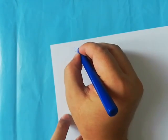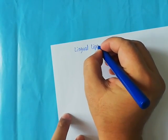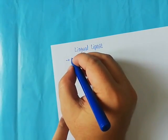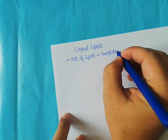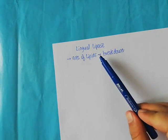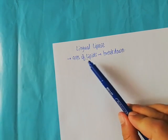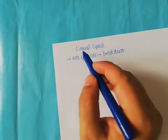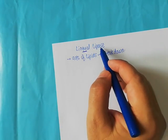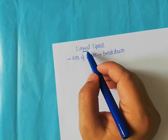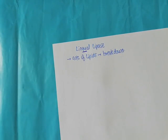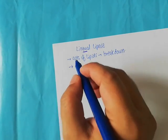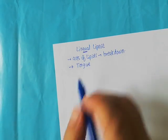Another important enzyme present in the saliva is known as lingual lipase. Lipases are enzymes that act on lipids, thereby causing their breakdown. The term 'lingual' specifies the lipase that is produced in the oral cavity. This lingual lipase is produced by glands present on the tongue, thereby performing their particular function.